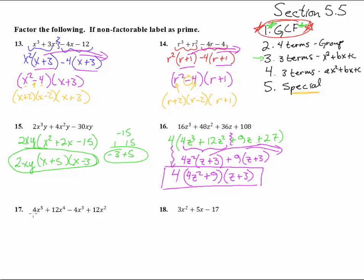Number 17. Ooh, look at that. It's in descending order. There are 4 terms, so we might end up grouping later, but don't forget to pull out that greatest common factor first. We're going to pull out, it looks like a 4, and an X squared is in everything. And we're going to be left with X cubed plus 3X squared minus X plus 3.